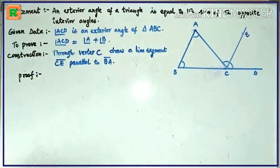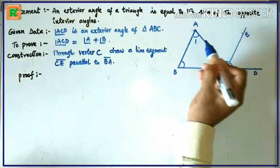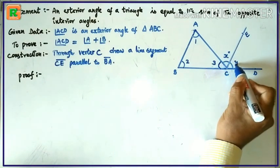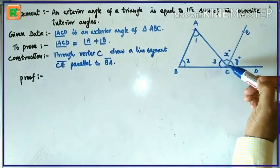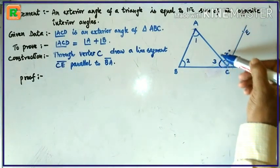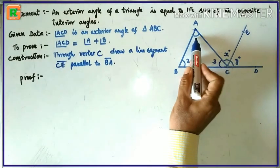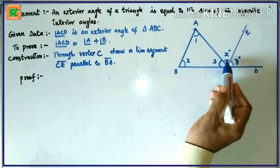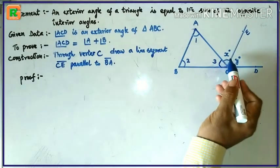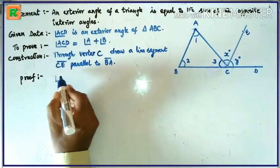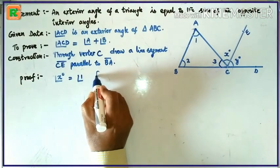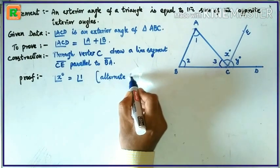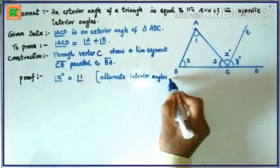Proof: Let us label the angles — angle 1, angle 2, angle 3, angle X, and angle Y. Since BA is parallel to CE and AC is a transversal, angle 1 and angle X are alternate interior angles. Since these are parallel lines, alternate interior angles are equal, so angle X equals angle 1.